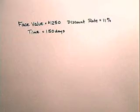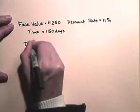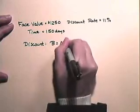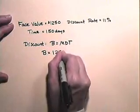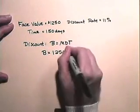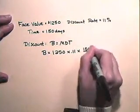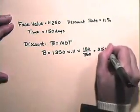Now let's look at an exercise in which we find bank discount and proceeds. In this exercise we have a note whose face value is $1,250, the discount rate is 11%, and the time is 150 days. So let's find the discount. The discount is always equal to B equals M times D times T. So the bank discount will be the face value, $1,250, times the discount rate, 11%, times the time, which is 150 days out of 360 days, which equals $57.29.